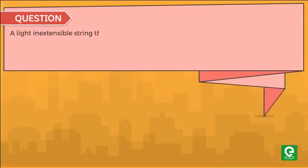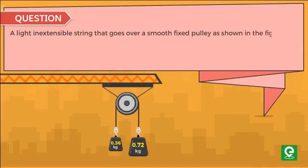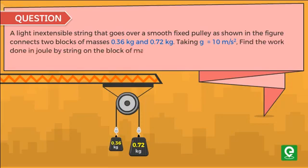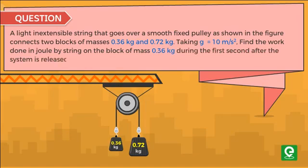Question: A light inextensible string that goes over a smooth fixed pulley as shown in the figure connects two blocks of masses 0.36 kg and 0.72 kg. Taking g equal to 10 meter per second squared, find the work done in joules by the string on the block of mass 0.36 kg during the first second after the system is released from rest.